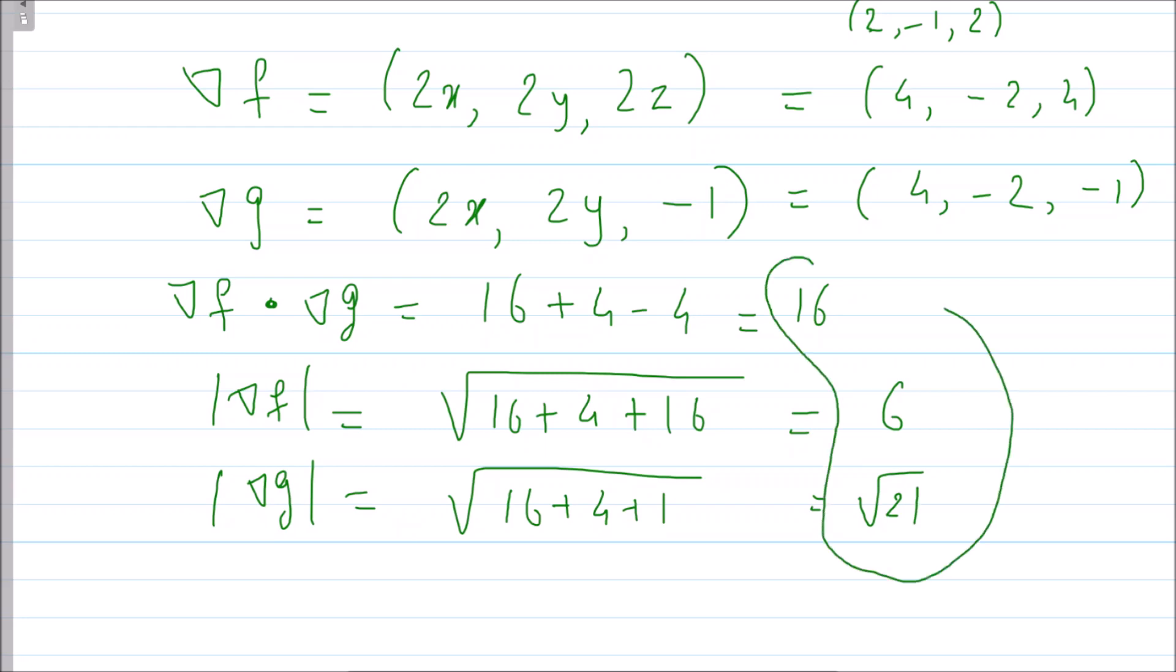So if I use these three values in the formula, what do I get? I get theta equals cosine inverse of the dot product upon 6 root 21. And now if I cancel by 2, therefore the angle between the given two surfaces is nothing but 8 upon 3 root 21.